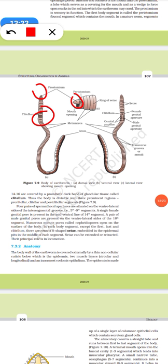So here is the mouth portion you see, which is the prostomium. Now four pairs of spermathecal apertures are situated on the ventral lateral sides of the intersegmental grooves of fifth and ninth. So we have the genital apertures over here. And the numerous minute pores with the nephridial pores open at the surface of the body. In each body segment except first and the last and the clitellum, there are rows of S-shaped setae. So there are various setae which is available, which is S-shaped setae.